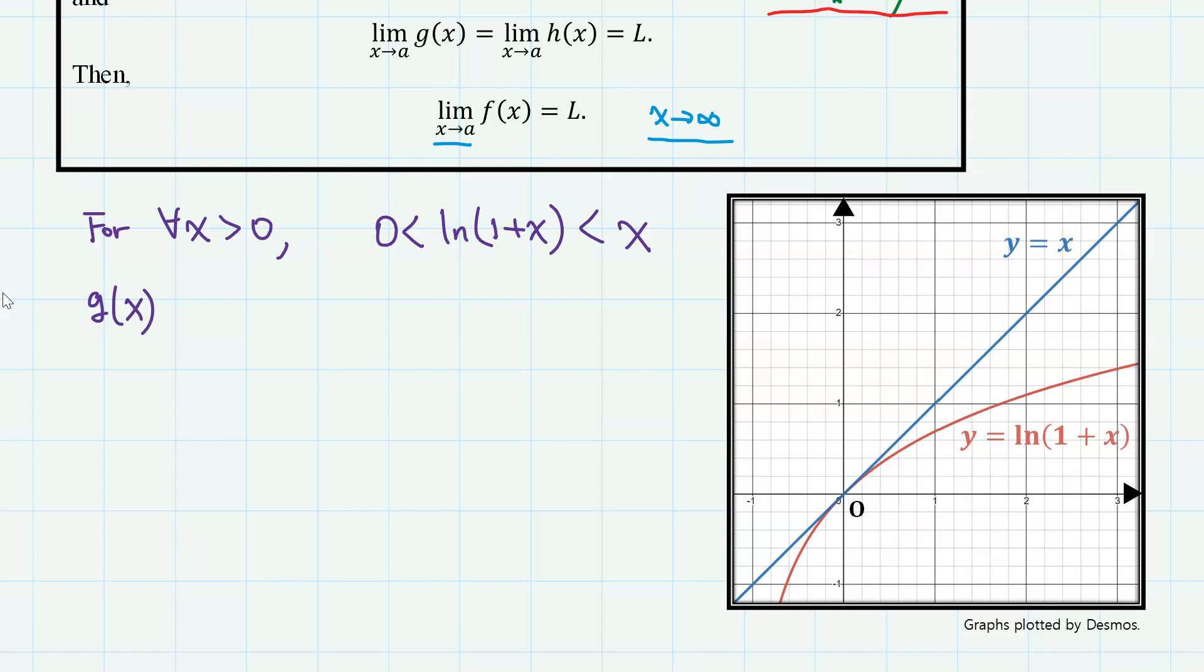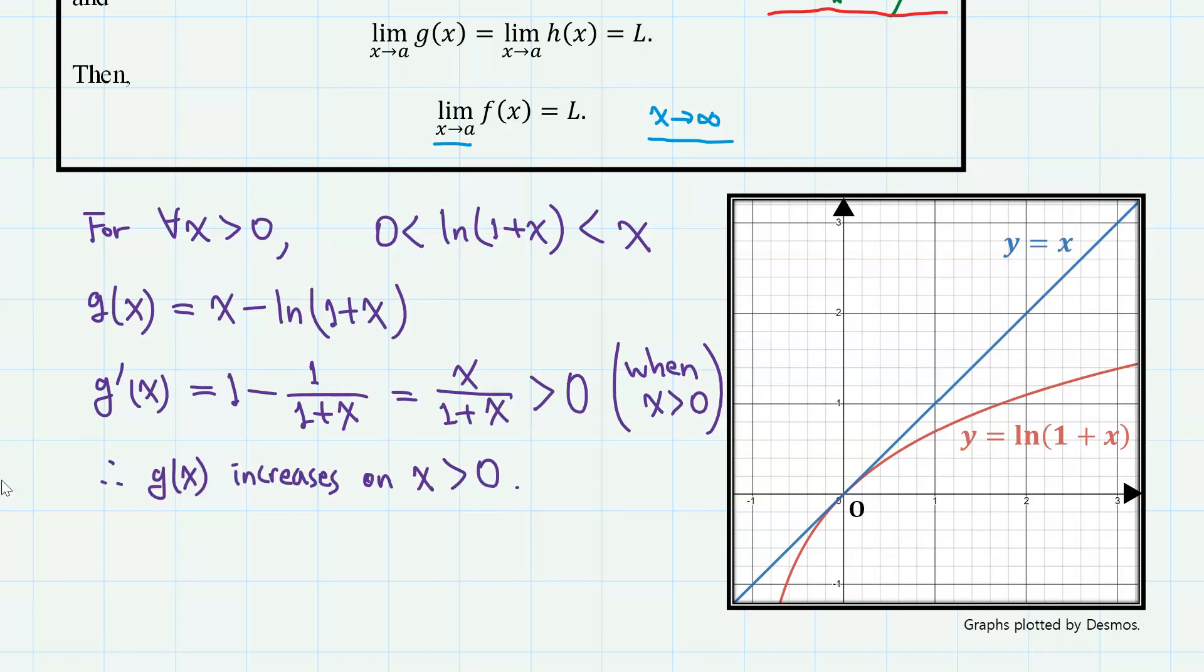Let function g(x) as x minus ln(1 + x). Then, the derivative g'(x) is given as 1 minus 1/(1 + x), which is x/(1 + x), which is positive when x is positive. Therefore, the function g(x) increases when x is positive.